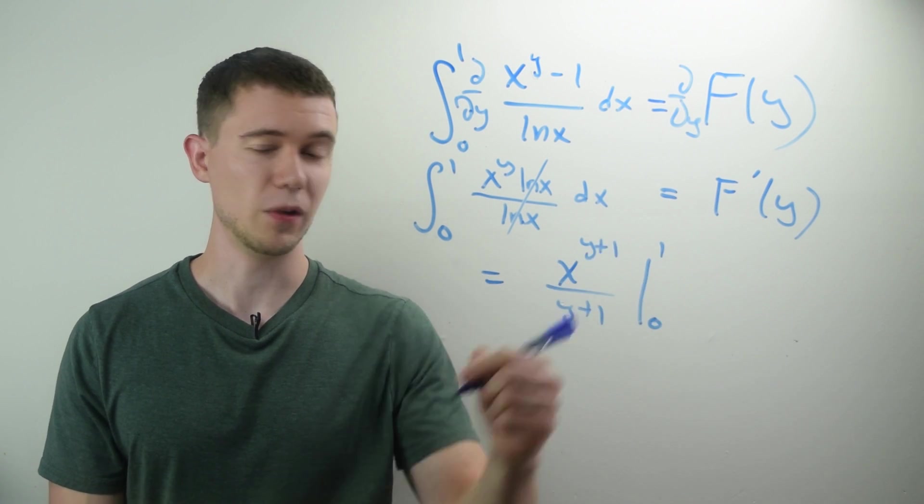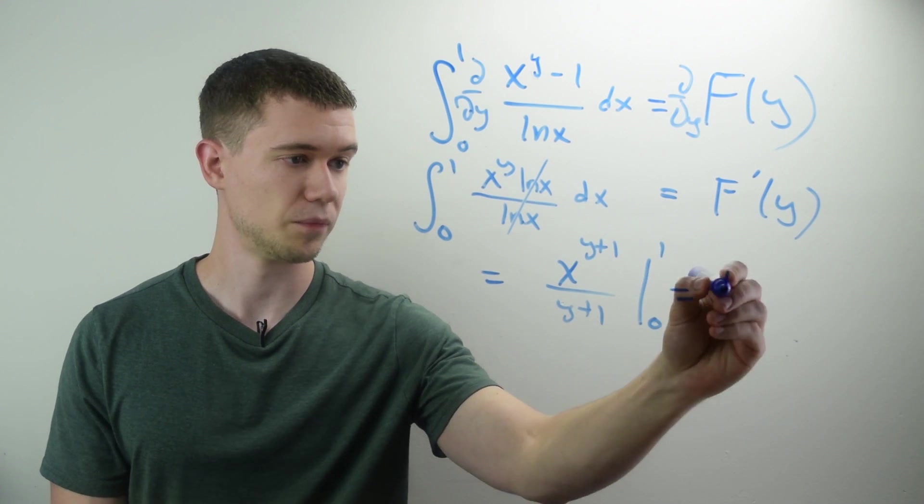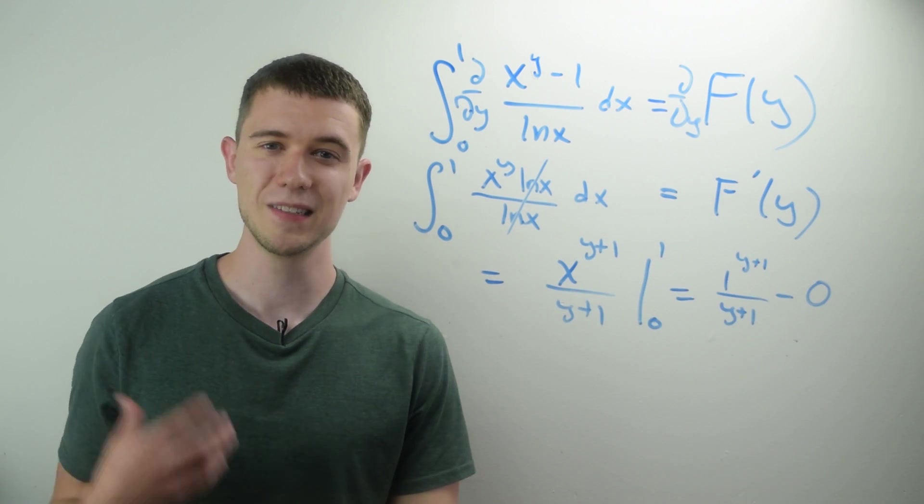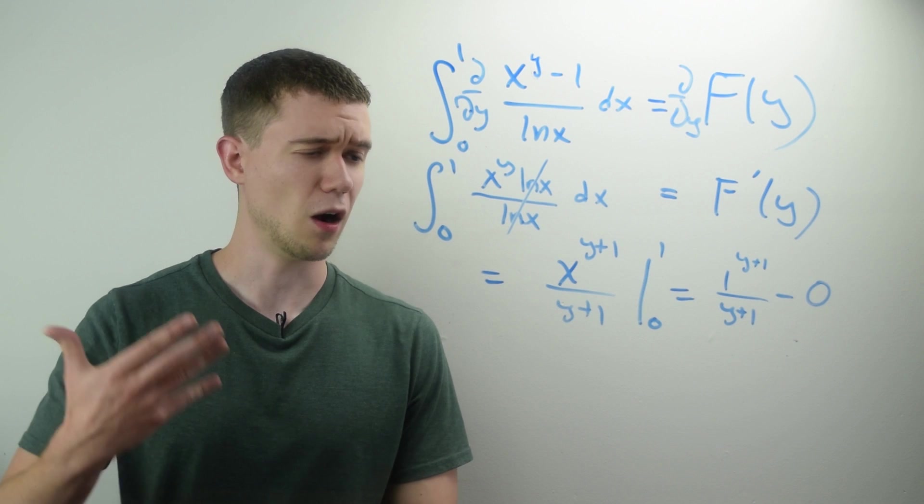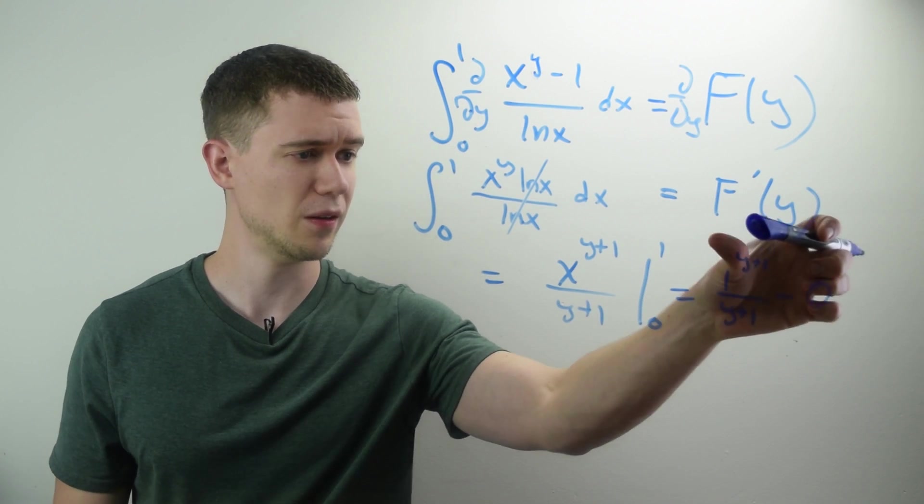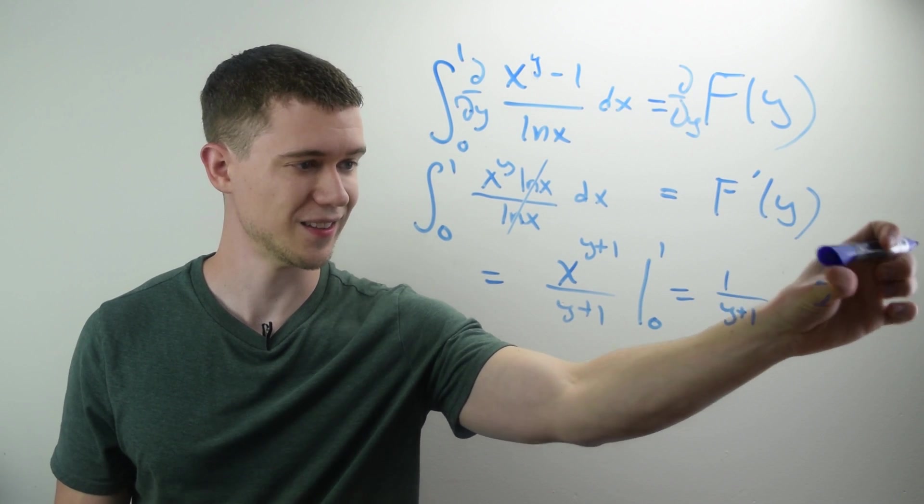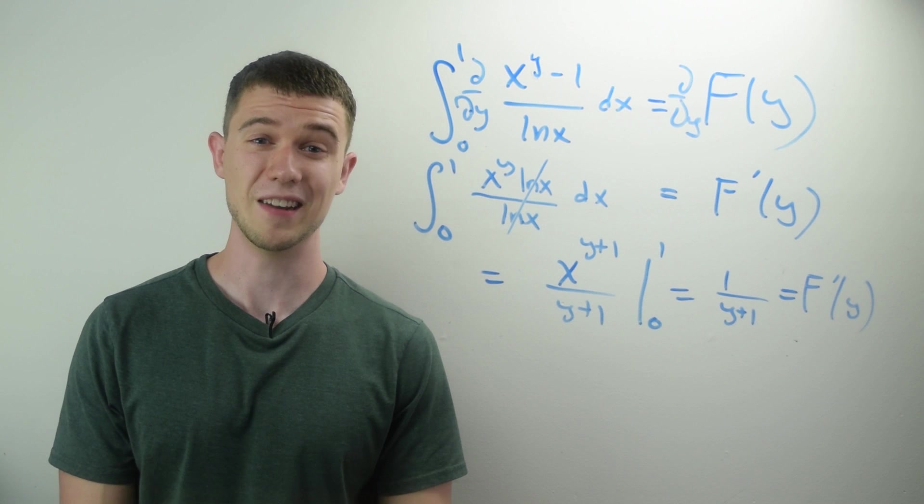Well, if I plug in 1, that's great. So I've got this. If I plug in 0, I get 0. 1 to any power is 1. I might as well just write it like this. And so this is f prime of y.